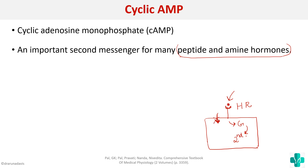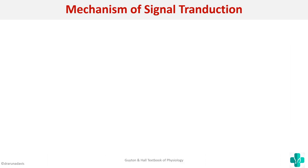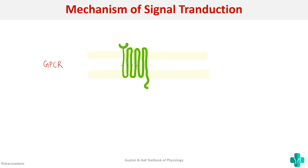An important point about cyclic AMP is that it is the first second messenger to be discovered. Now we can draw a diagram for the mechanism of signal transduction. Suppose this is a cell membrane — here we have a receptor, which is a G protein coupled receptor. It is a 7-pass receptor, meaning it passes through the cell membrane seven times, coupled to G proteins.